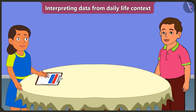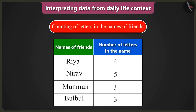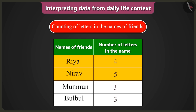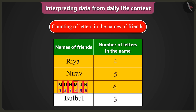And how is that? Look, Bubli, here the first name is Riya, which is made from four letters, and you have written the number four only. And the second name is Nirav, which is made from five letters. Bubli, your table is okay till here. Now the third name is Munmun — there are not three, but six letters in it.